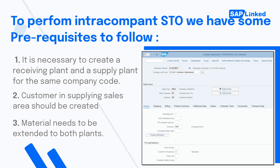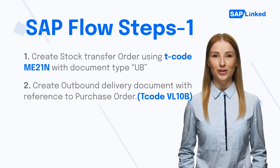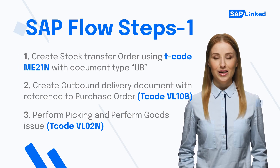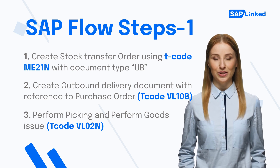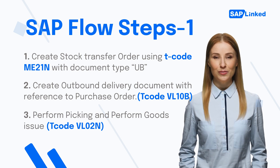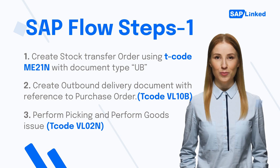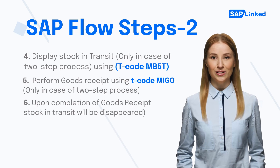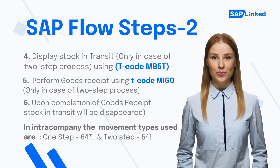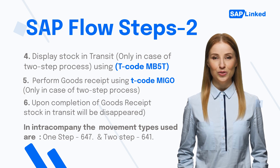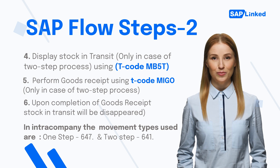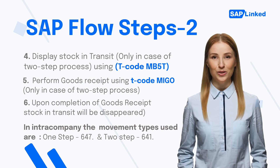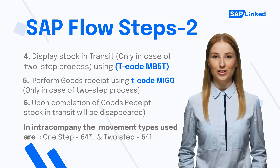Let's look into the flow steps of the intra-company process in SAP. Flow steps for intra-company stock transfer order are: 1. Create stock transfer order using T-code ME21N with document type UB. 2. Create outbound delivery document with reference to purchase order. 3. Perform picking and perform goods issue. 4. Display stock in transit, only in case of two-step process. 5. Perform goods receipt using T-code MIGO, only in case of two-step process. 6. Upon completion of goods receipt, stock in transit will be disappeared.